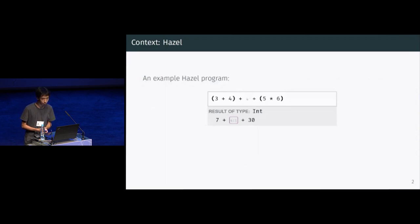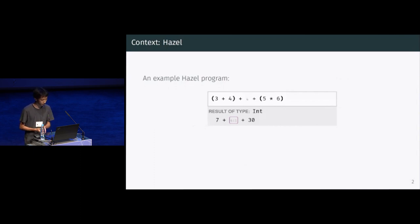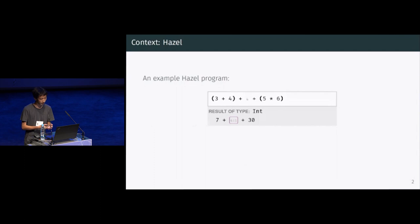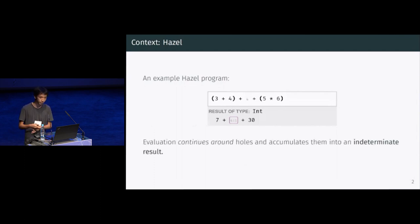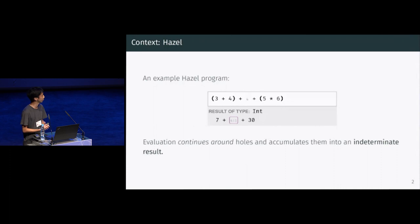As an example, we have this Hazel program that's just the quantity three plus four, plus a hole in the middle, plus five times six. We'll first do three plus four — that's seven. We'll try to add the hole, and this gives us what we call an indeterminate result, which is just seven plus hole. Instead of aborting execution there, we actually continue around the hole, do five times six — which is 30 — and our final result is seven plus hole plus 30. This is evaluation with holes.